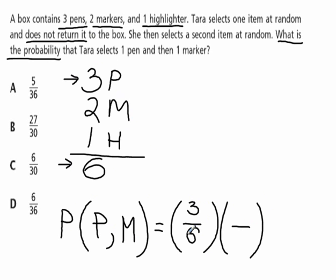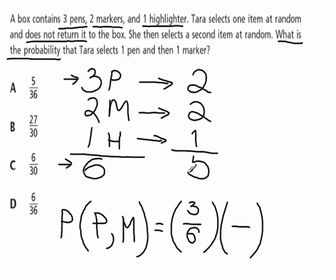Now she does not return it. That means she picks a pen and the number of pens goes down to two because she picks one. She did not pick a marker, so the number of markers stays the same at two, and she did not touch the highlighter. So it's still one highlighter. Two plus two plus one gives us five items in total.